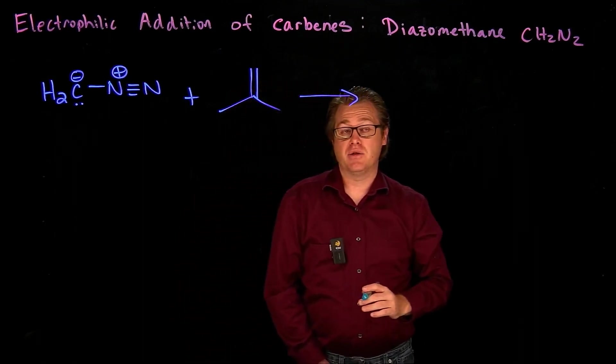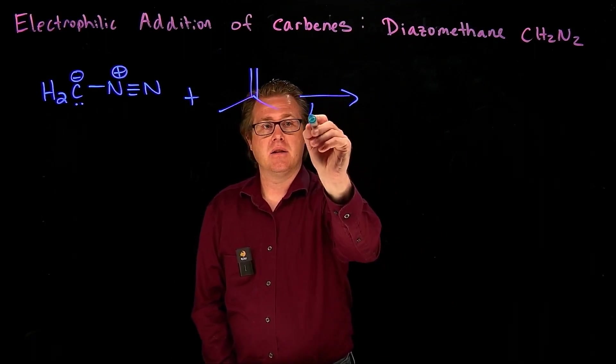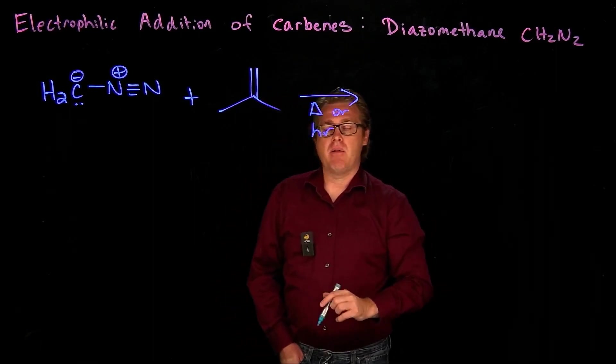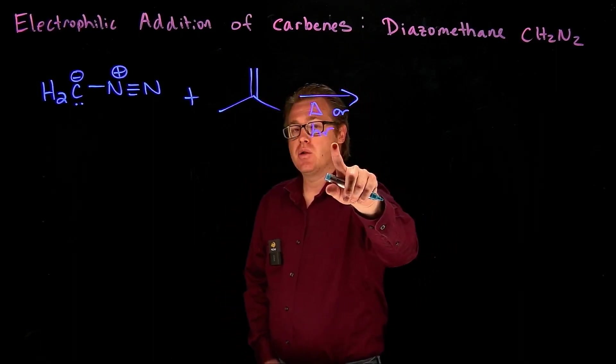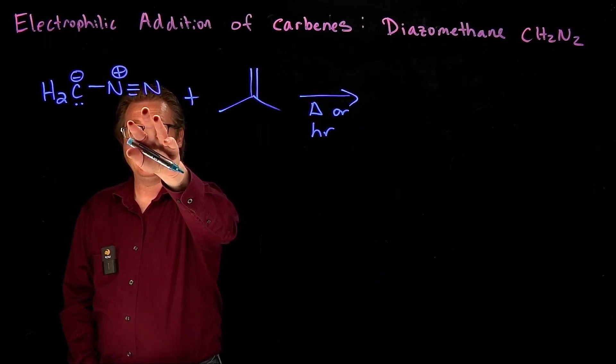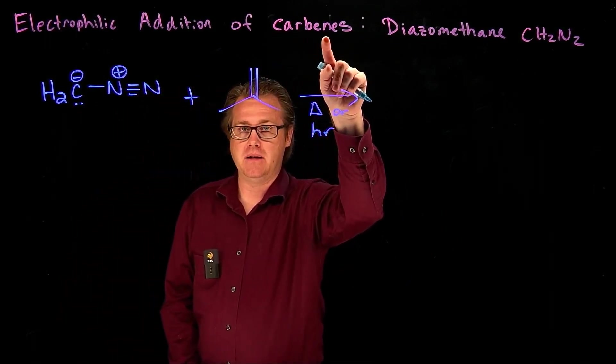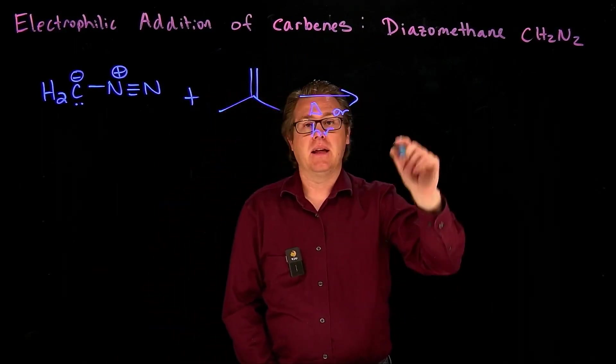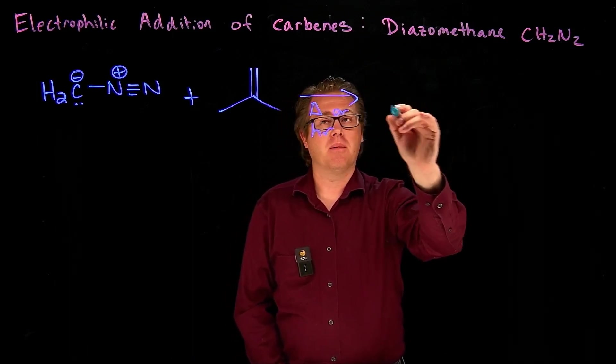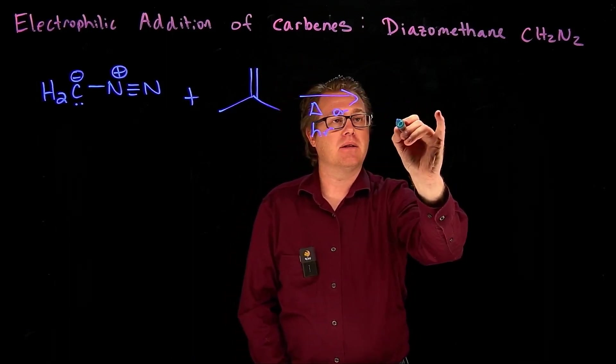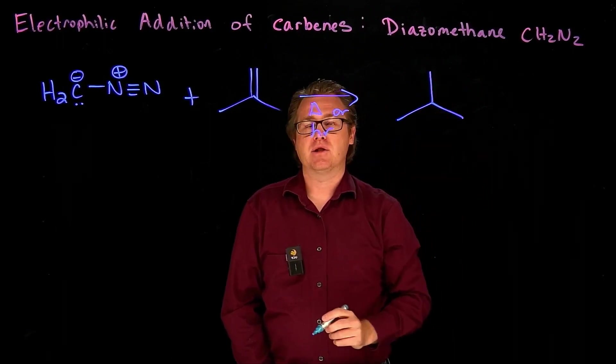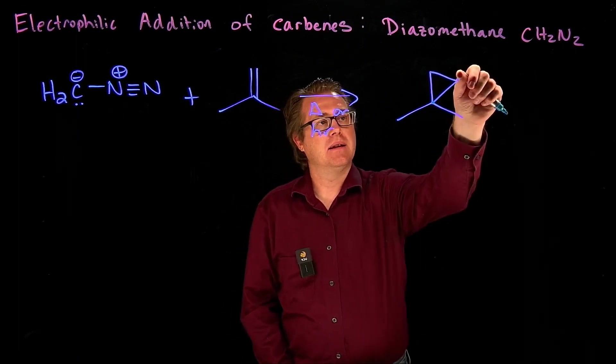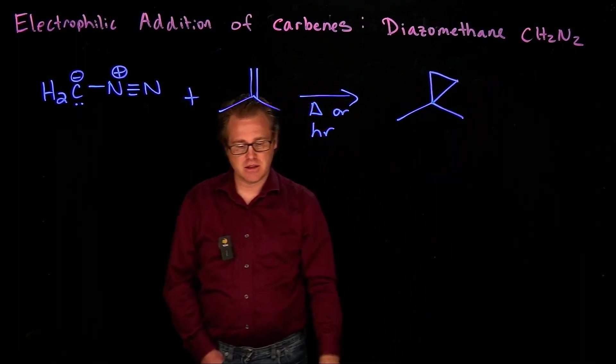But in order to make this reaction work, we have to add heat or light. And when we add heat or light, it's going to convert this diazomethane into what we call a carbene. And I'll show you what that is in a minute. But what happens now is that we can take this newly formed carbene and react it with this alkene in this fashion. It is going to add a carbon but make a three-membered ring, just like that.